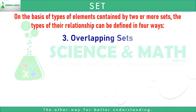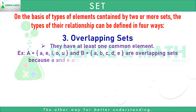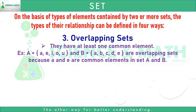Number three: overlapping sets. Overlapping sets have at least one common element. For example, A equals the set of A, E, I, O, U and B equals the set of A, B, C, D, E. Here, elements A and E are present in both set A and set B. A and E being the common elements in both set A and set B makes set A and set B overlapping sets.